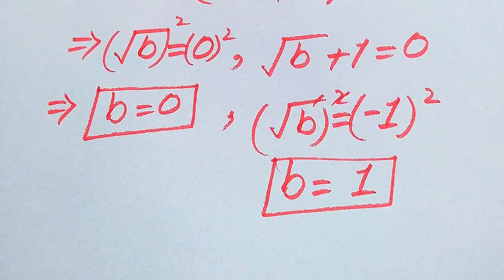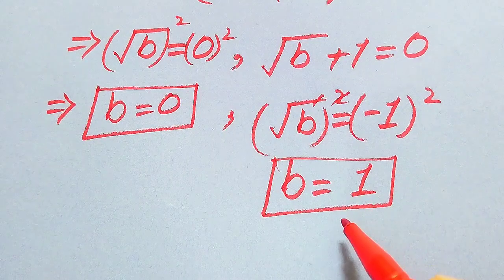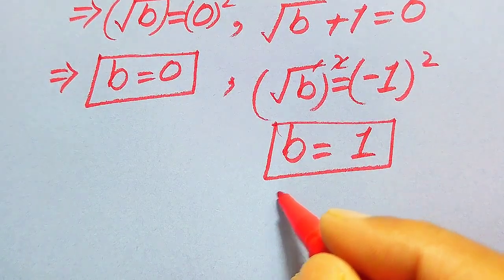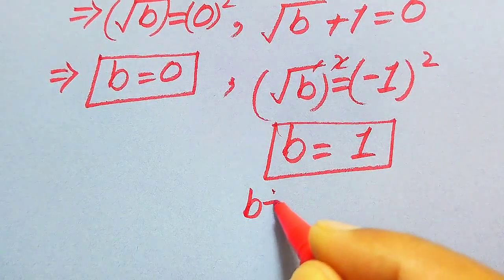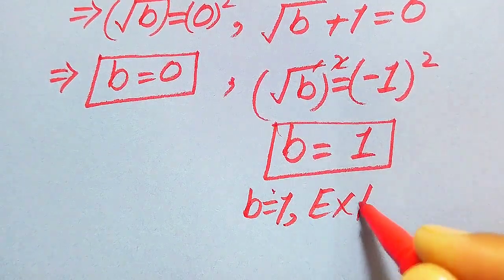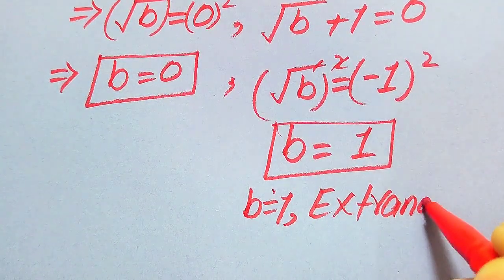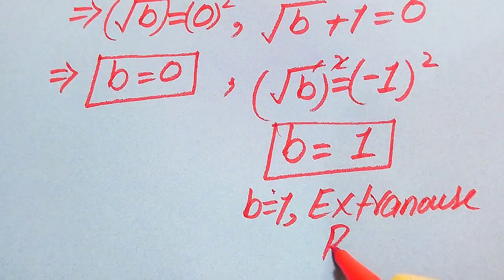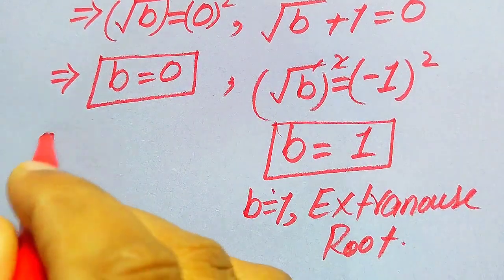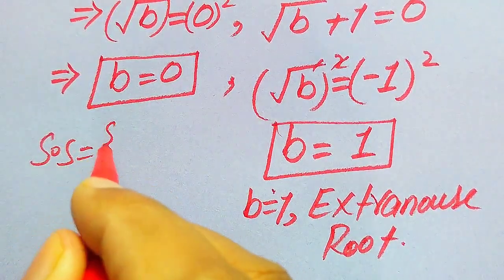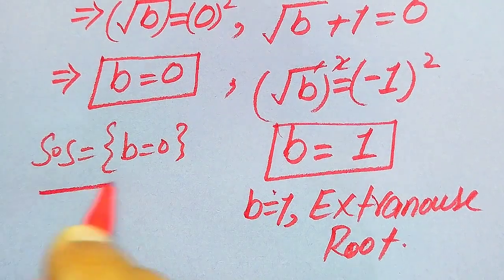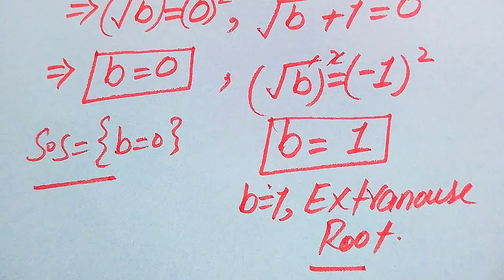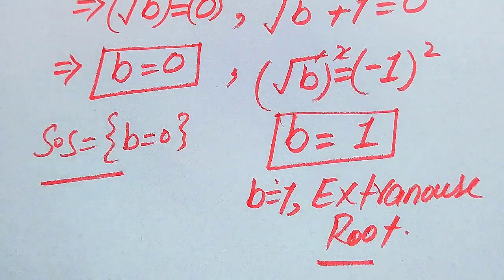We already verified in Method 1 that b equals one does not satisfy the given equation, so b equals one is an extraneous root. Therefore, b equals zero is the solution set of the given equation. Thank you so much for watching this video. Please subscribe to my channel for more videos.